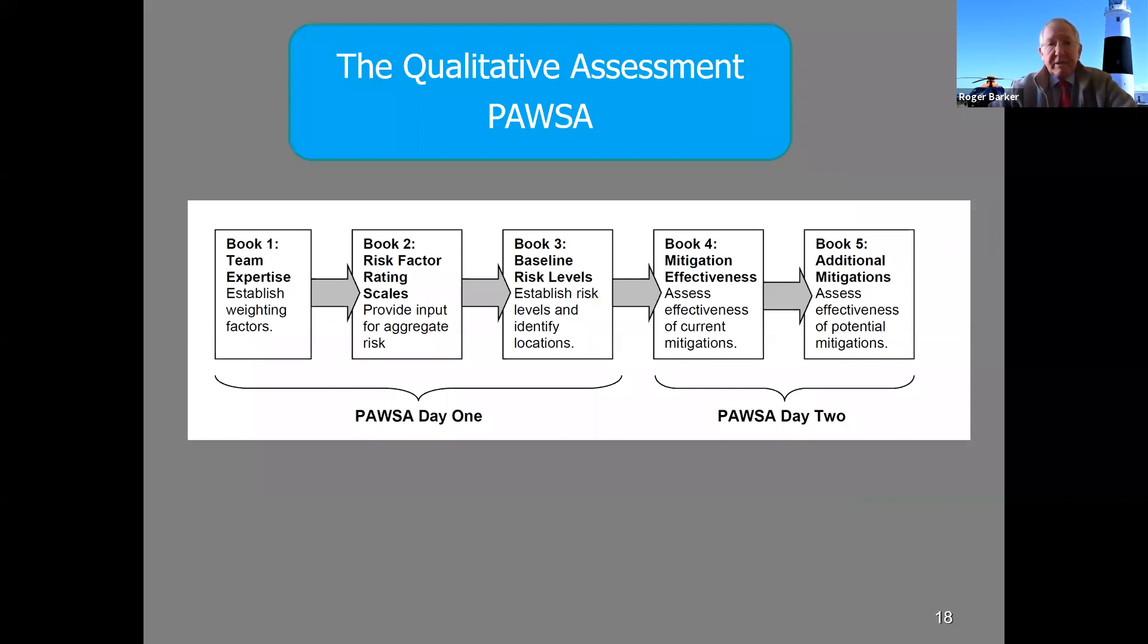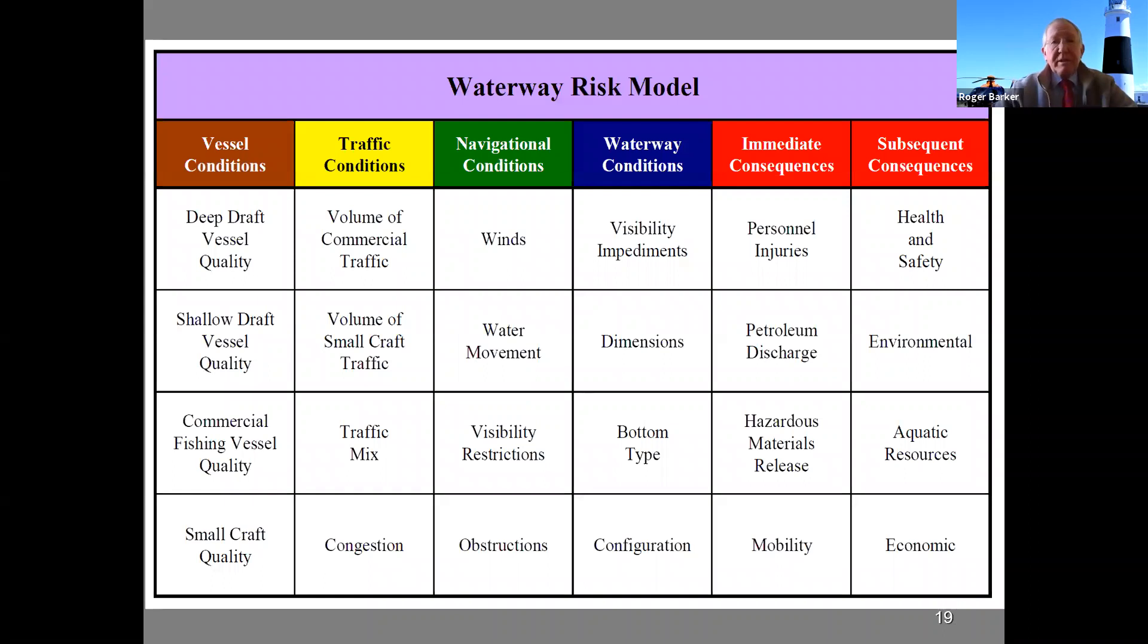Now, PAUSA, one of the important elements is that Book One establishes weighting factors, because you've got to make sure that the appropriate weight is given to the expertise of the people attending the course. PAUSA uses the waterway risk assessment model, covering many sectors to assess the risk. It is intrinsic examination of all those areas which is essential, balanced against quantitative risk assessment.